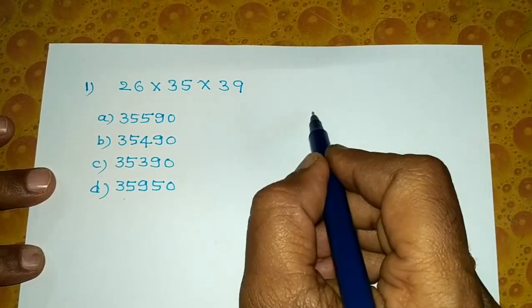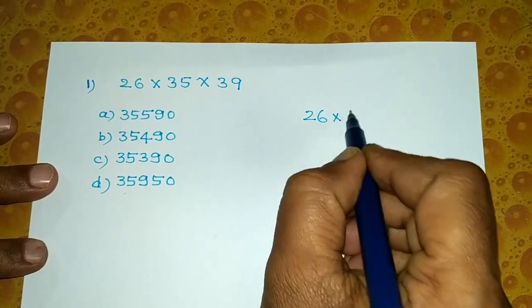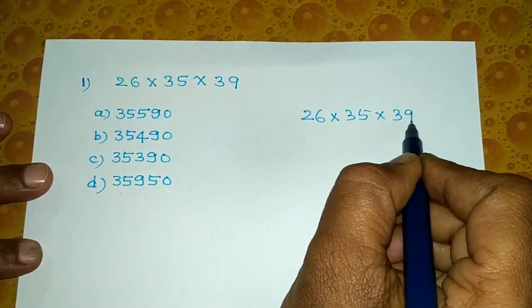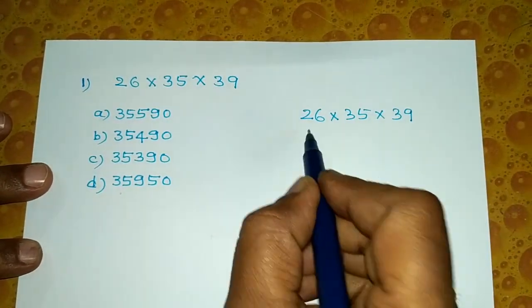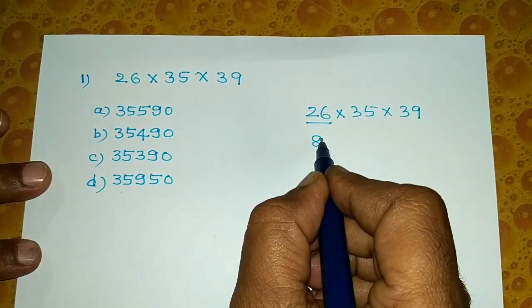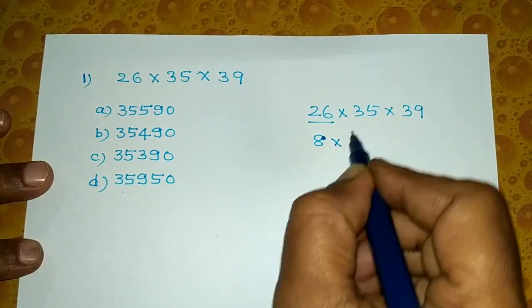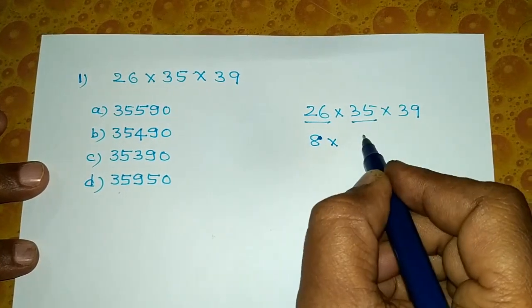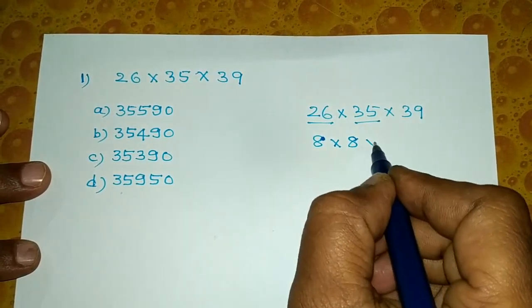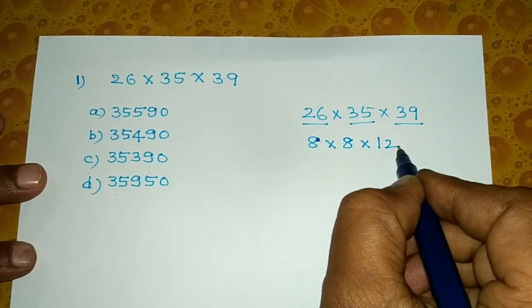Now the problem is 26 x 35 x 39. We have two exams. 2 plus 6 is 8. 8 x 3 plus 5 is 8 x 3 plus 9 equals 12.